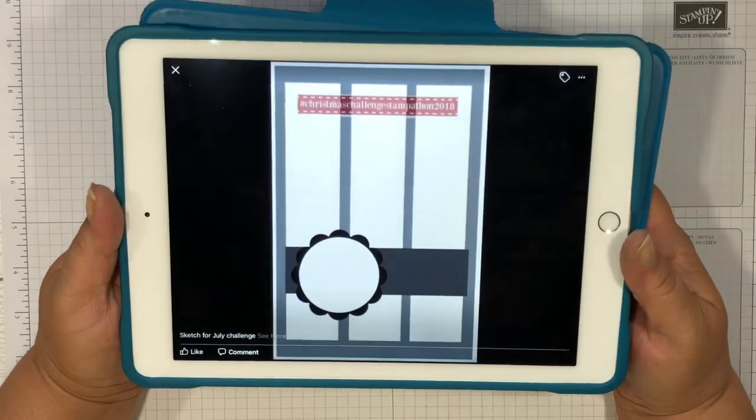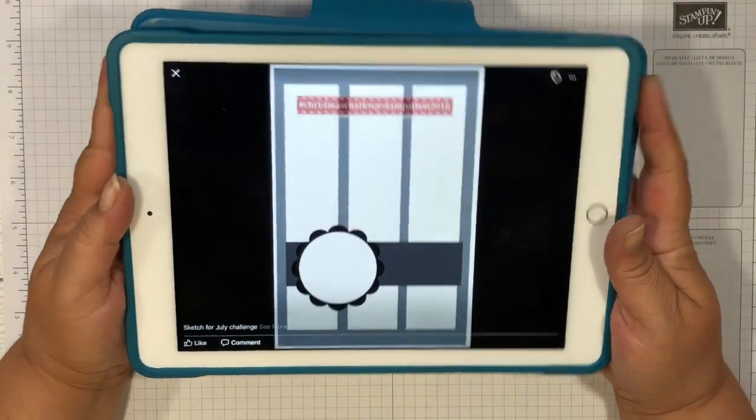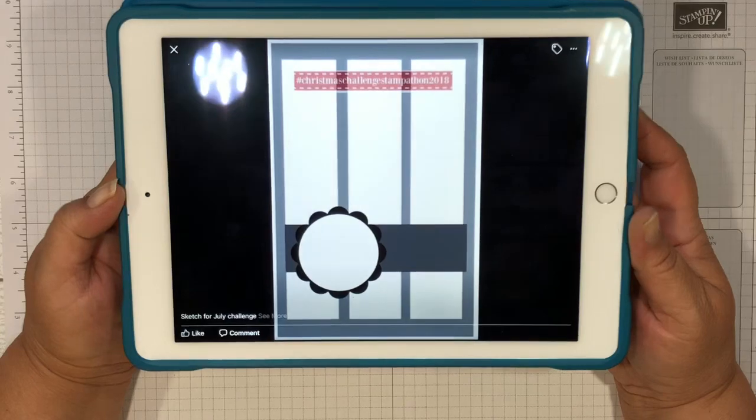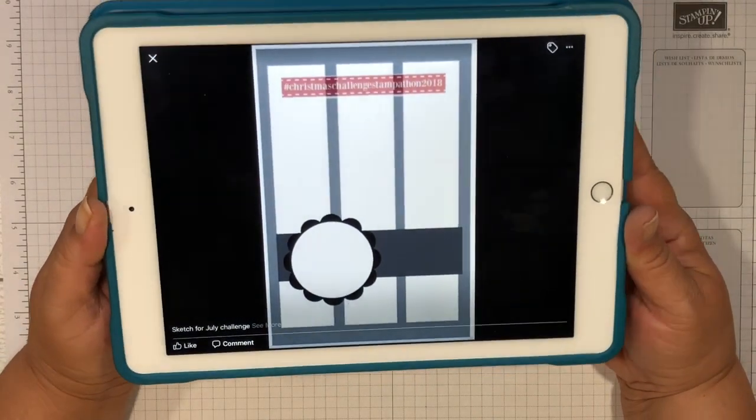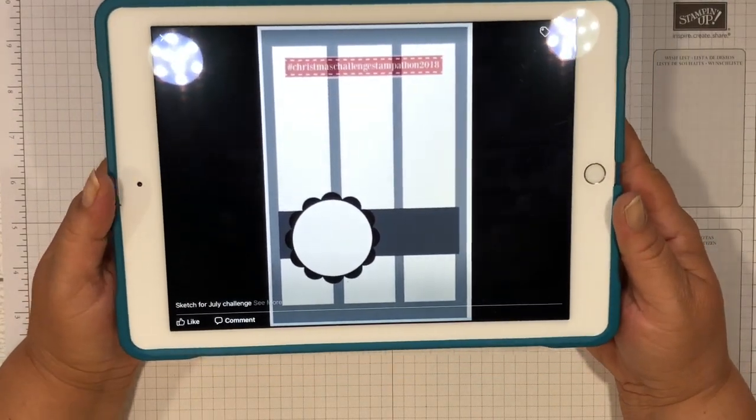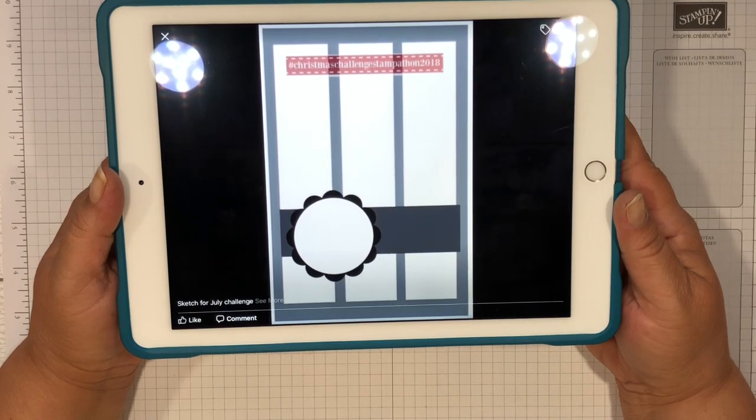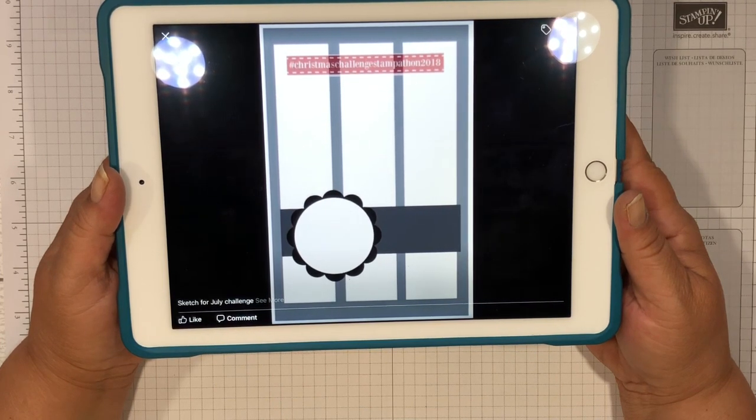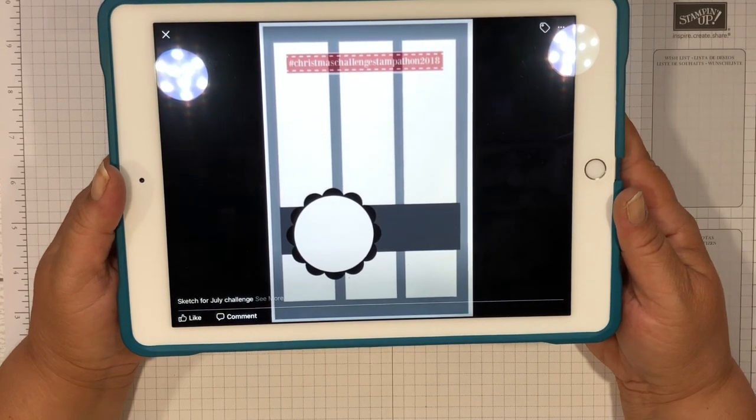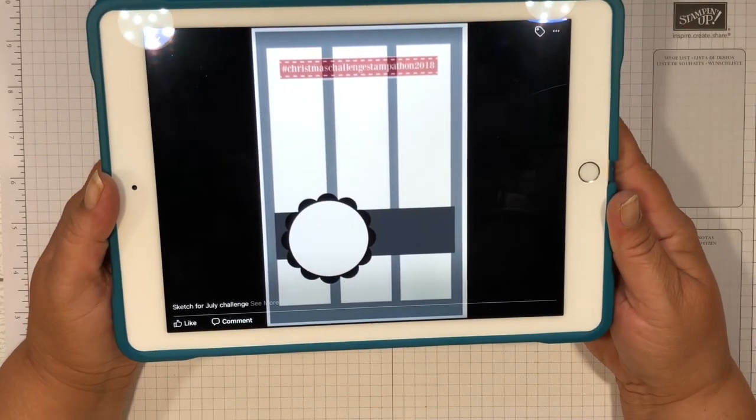This month we have something a little bit different for you guys. We have created a sketch and what we would like for you to do is create a card using this sketch or your take on this sketch. You can do anything you want. You'll see that all four of us have something just a little bit different.